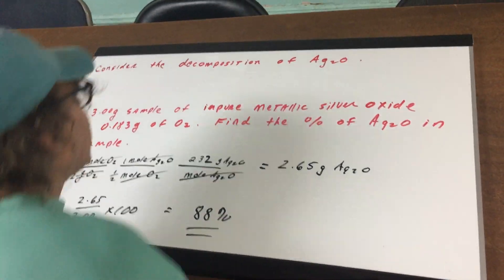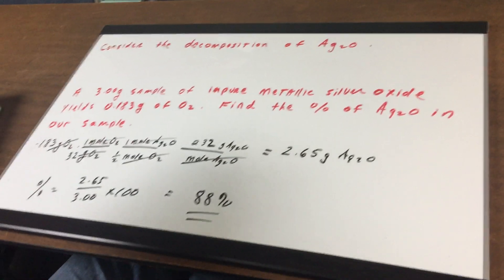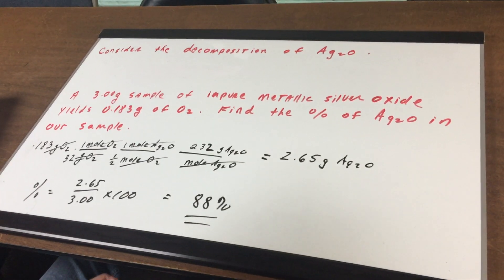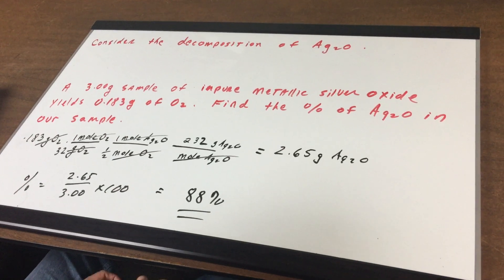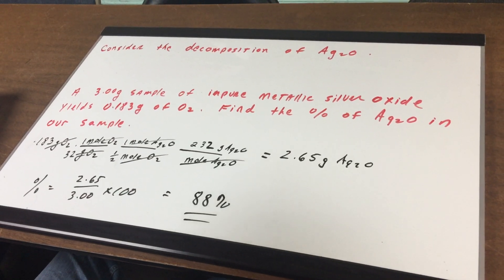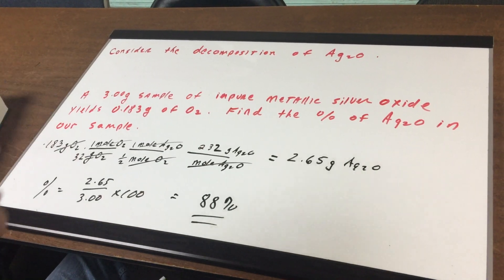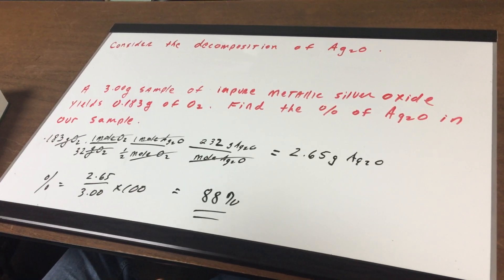What we're going to do is consider the decomposition of silver oxide. A 3.00 gram sample of impure metallic silver oxide yields 0.183 grams of oxygen. Find the percent of silver oxide in the sample.